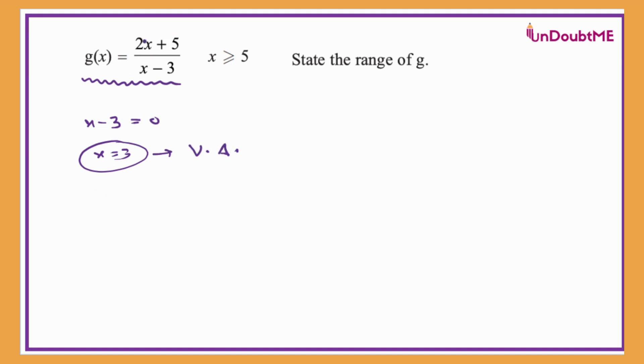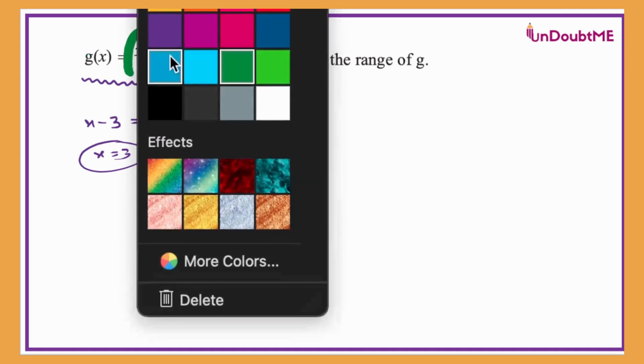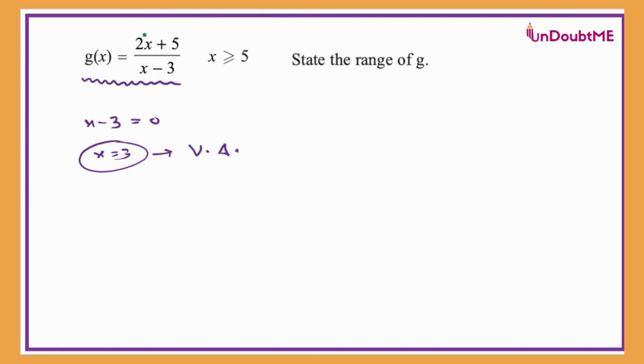And if I just take away the coefficients of x in numerator and denominator, then y is equal to two is a horizontal asymptote.